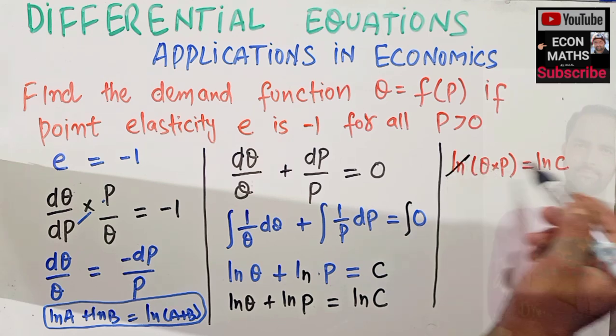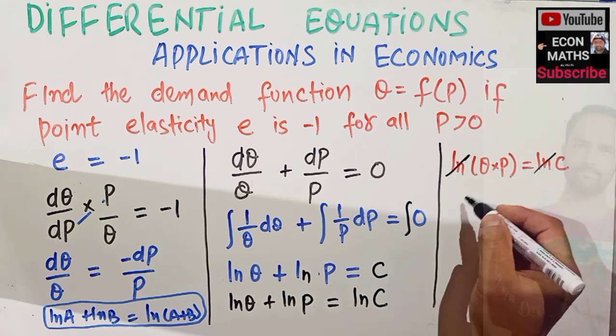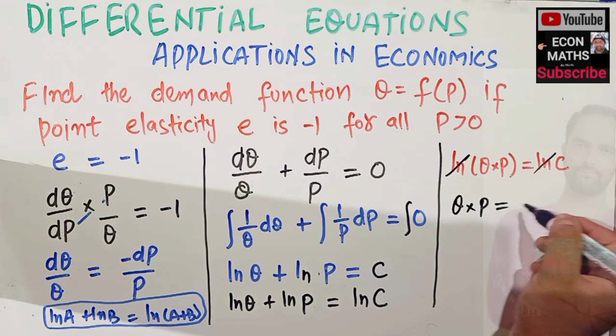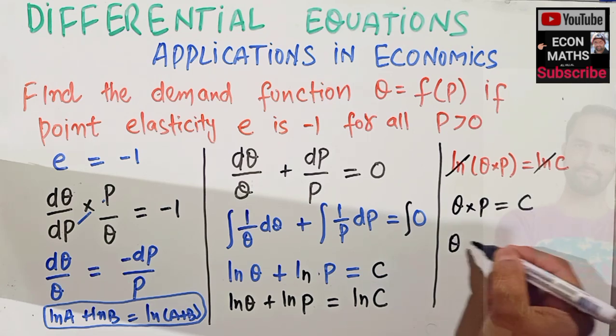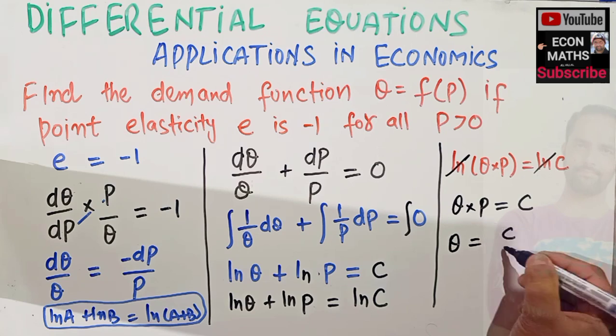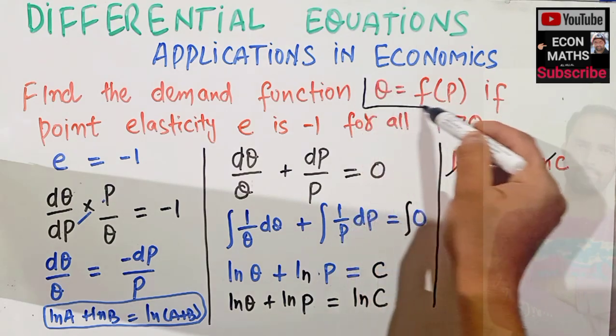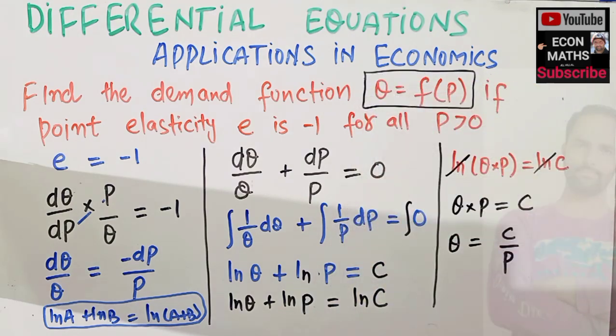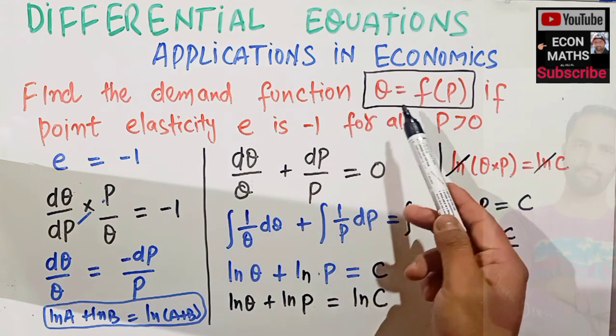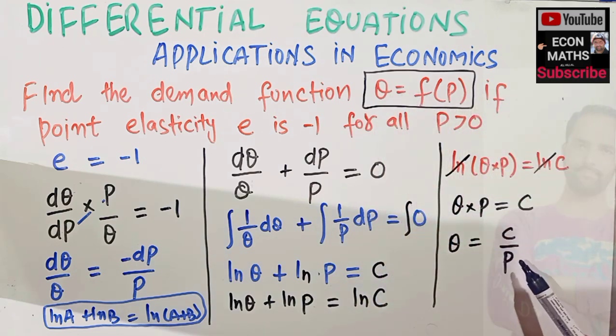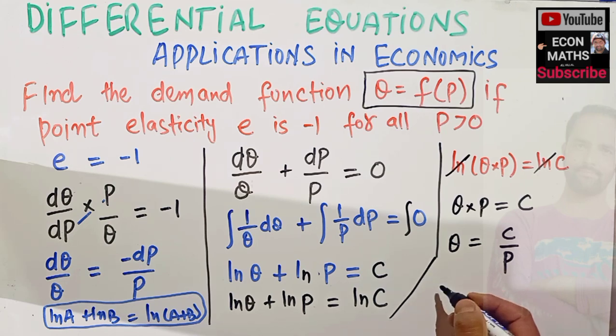Here ln and ln will get cancelled, so we are left with Q times P is equal to C. That implies Q is equal to C upon P, transposing it, and you can see here quantity is a function of price. That exactly is the thing which we need here. We were told to construct a demand function Q as a function of price, and here we can see we have constructed it in this fashion. Our Q equals f of P which is equal to C upon P, which is the required demand function. I hope I made myself clear in this video, thank you.